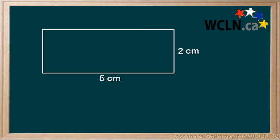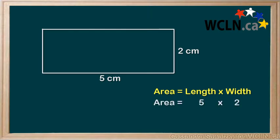Let's find the area of this rectangle. The equation we will be using is area equals length times width. We can fill in our values to get 5 times 2, and then solve it to have 10 cm squared. And always remember to square your units.